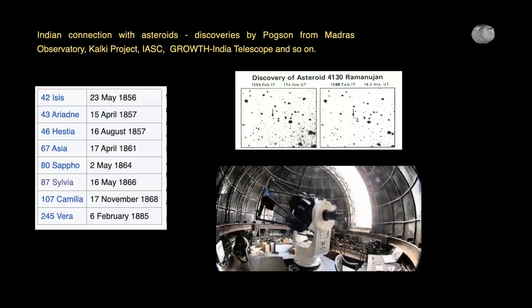Asteroids and the connection to India: our institute dates back to 1786, where under the British there was something called the Madras Observatory. Around the 1830s or 40s, they got a new director called Norman Pogson — a very famous astronomer. The apparent magnitude scale was formulated by Pogson. He discovered so many asteroids from Madras — those were the first few asteroids discovered from India.